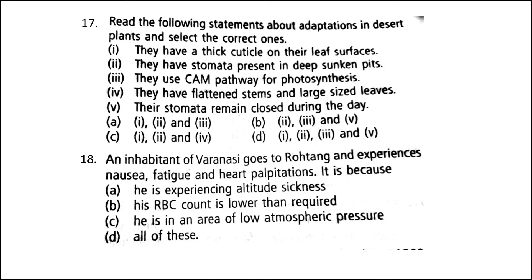Next: an inhabitant of Varanasi goes to Rohtang and experiences nausea, fatigue, and heart palpitations. It is because — the answer is D, all of these: he is experiencing altitude sickness, his RBC count is lower than required, and he is in an area of low atmospheric pressure. When we go to high altitude places (greater than 3500 m), we experience altitude sickness. Symptoms include nausea, fatigue, and heart palpitations. It is due to the low atmospheric pressure of high altitudes that the body doesn't get enough oxygen. The body compensates by increasing RBC production, decreasing the binding capacity of hemoglobin, and increasing breathing rate.